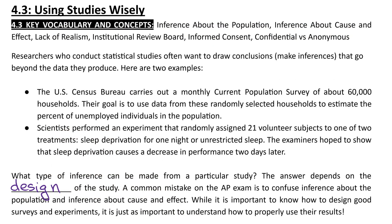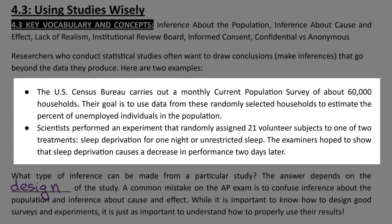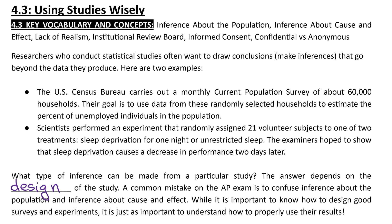Section 4.3 focuses on using studies wisely. Let's consider two examples. The U.S. Census Bureau carries out a monthly current population survey of about 60,000 households, with a goal to use data from randomly selected households to estimate the percent of unemployed individuals in the population. A second example is where scientists perform an experiment that randomly assigns 21 volunteer subjects to sleep deprivation for one night or unrestricted sleep, hoping to show that sleep deprivation causes a decrease in performance two days later. What we want to know is what type of inference can be made from each of these studies.